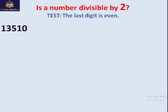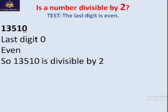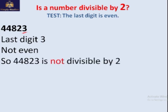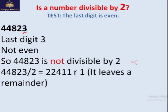Let's test another number: 13510. The last digit is 0, which is even, so this is also divisible by 2 — no remainder. Let's test another: the last digit is 3, not even, so this number is not divisible by 2. There's a remainder, so it's not perfectly divisible by 2.